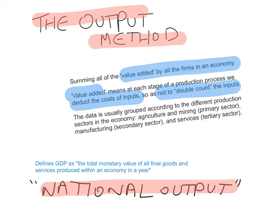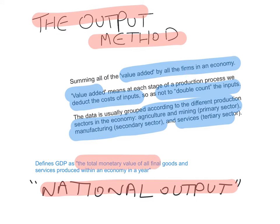The data is usually grouped according to the different production sectors: agriculture and mining (the primary sector), manufacturing (the secondary sector), and services (the tertiary sector). The output method defines GDP as the total monetary value of all final goods and services produced within an economy in a year. By final goods and services, we mean we focus only on value added, and this method corresponds to the output flow in the circular flow of income.